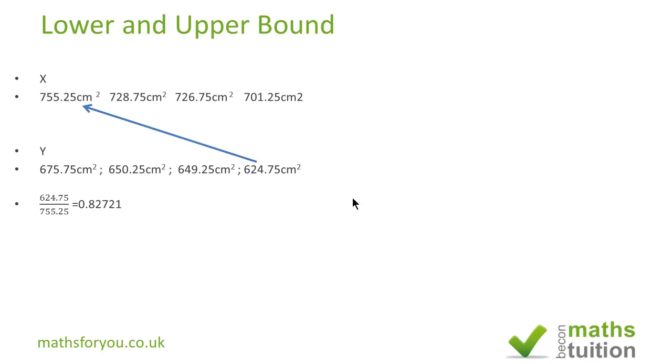Similarly, for the biggest fraction, we need to divide the largest area for box Y by the smallest area for box X, and we get 0.963636. So all your fractions will be between 0.82721 and 0.963636.